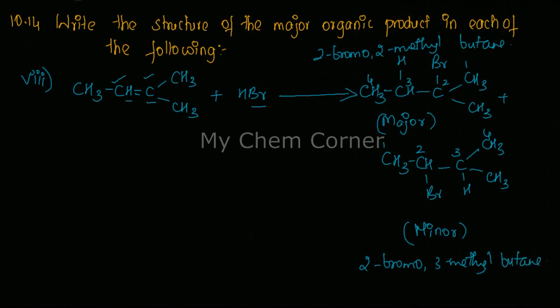All right, so out of this we only need to write the structure for the major product. This will follow the Markovnikov's rule. If we had a peroxide on the arrow, it would follow anti-Markovnikov's rule or the peroxide effect, but here it's just HBr so it's going to follow Markovnikov's rule.